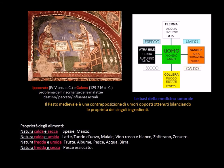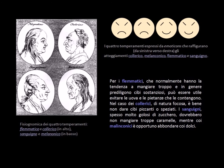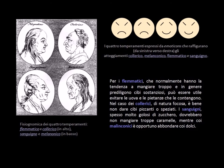Ippocrate tentò di applicare tale teoria alla natura umana, definendo l'esistenza di quattro umori base a cui corrispondono quattro temperamenti — flegmatico, melanconico, collerico e sanguigno — quattro qualità elementari: freddo, caldo, secco, umido; quattro stagioni: primavera, estate, autunno e inverno; quattro stagioni della vita: l'infanzia, la giovinezza, la maturità e la vecchiaia.